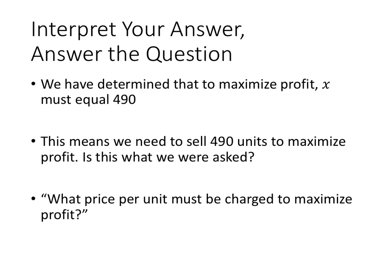But as with other application problems, we want to make sure that we really have answered our question. So what did we figure out? We figured out that x has to be 490. But what does x represent? x was the quantity, so that means that the profit is maximized when we sell 490 units. But that's not what we were asked for. They asked us what price per unit must be charged in order to maximize profit.